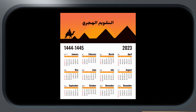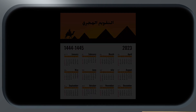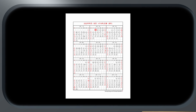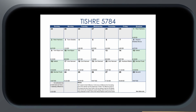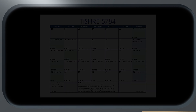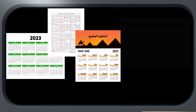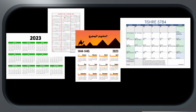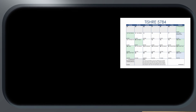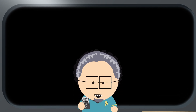By the Islamic calendar the current year is 1444; by the Chinese calendar it's 4719; by the Hebrew calendar it's 5784. So given that we have multiple calendars in use just on Earth, why would we think there's only one calendar in use in space? Obviously an organization as vast as the Federation would need to standardize its dating system, or it would be impossible to set a meeting place and time for any two people.